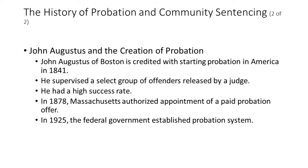Close attention was paid to evaluating whether a candidate would likely prove to be a successful subject for probation. The offender's character, age, and the people, places, and things apt to influence him or her were all considered. Augustus was subsequently credited for founding the investigation process — one of three main concepts of modern probation, the other two being intake and supervision. He was also the first to apply the term 'probation' to his method of treating offenders. In 1878, Massachusetts authorized the appointment of a paid probation officer, and other states followed suit, as did the federal government in 1925 when they established their own probation system.